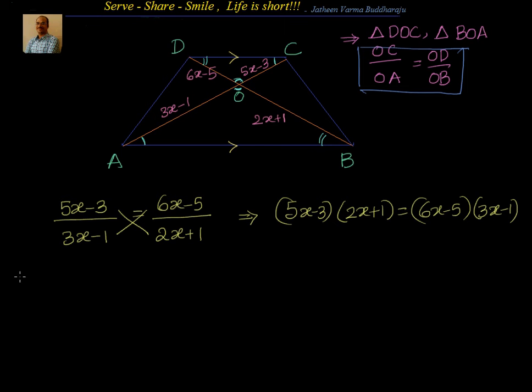Now, let us go to the next step. Simplify this. We will have 5X into 2X, 10X square. 5X into plus 1 is 5X minus 6X. Can I say minus X? Minus 3 into plus 1 is minus 3 which is equal to 6X into 3X is 18X square. Then, 6X into minus 1 minus 6X minus 15X. I can write it as minus 21X plus 5.